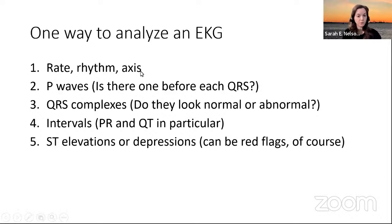For axis, you're looking at leads I and aVF to see if those are both in the positive direction. If so, it'll tell you it's a leftward axis. For rate, you can look at the upper left-hand corner and see what the rate is there, though there are other ways to elucidate that as well.